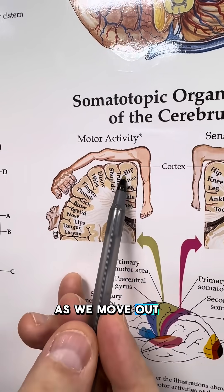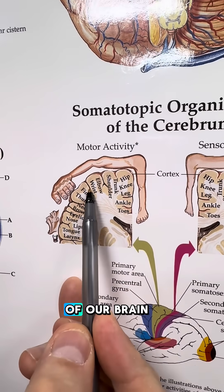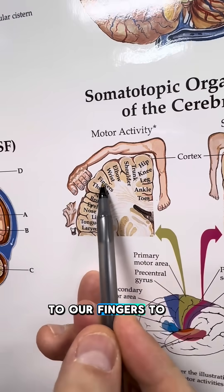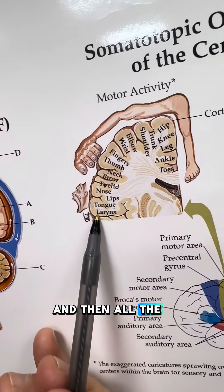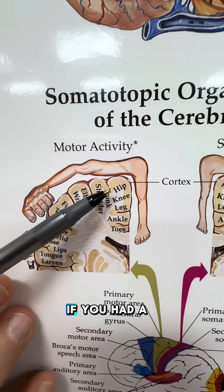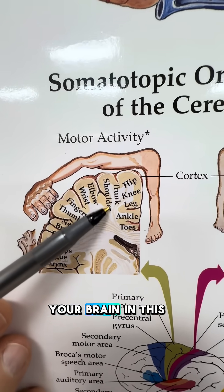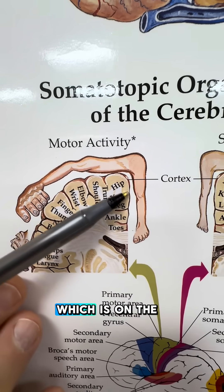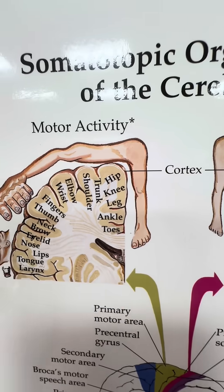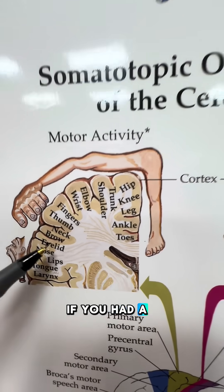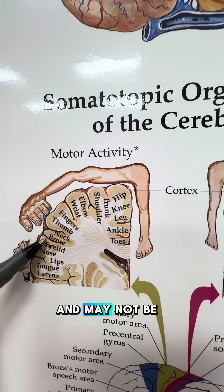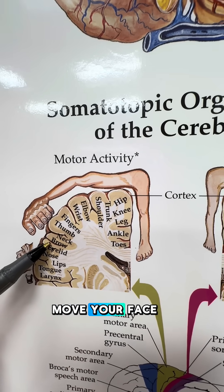As we move out towards the outside of our brain, you can see we go from our elbow to wrist to our fingers to our thumb, and then all the way down to where our tongue and our larynx is. If you had a stroke in this region on the inside middle of your brain, you may not be able to move your leg. If you had a stroke in this area right here, you'll have weakness of your face and may not be able to move your face.